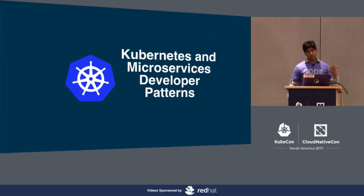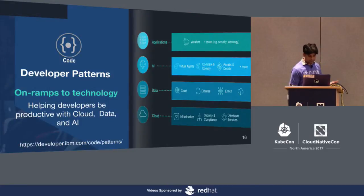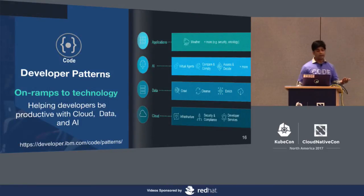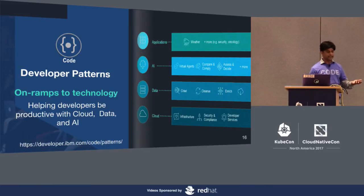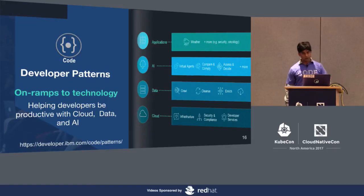We also created a lot of developer patterns to show how Kubernetes and microservices work great together. They are essentially on-ramps to technology and help developers be productive with cloud, data, and AI. You can find a lot of our developer patterns on developer.ibm.com/code/patterns.